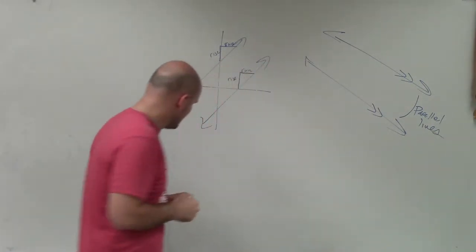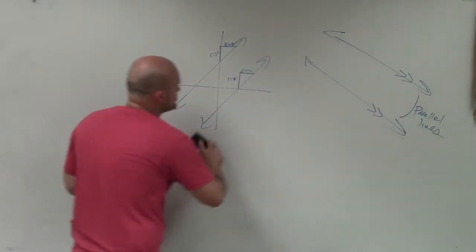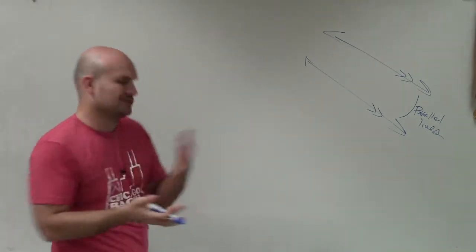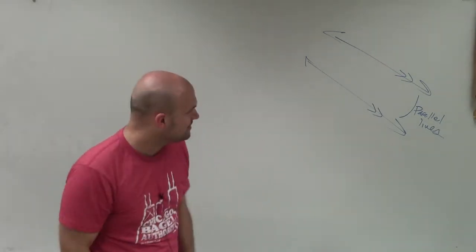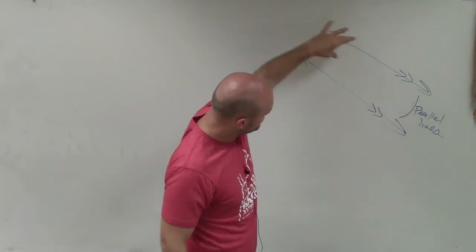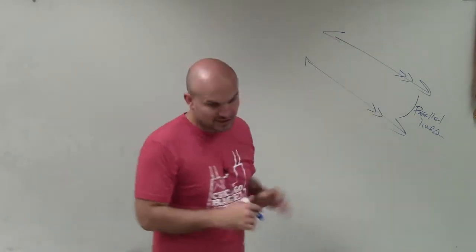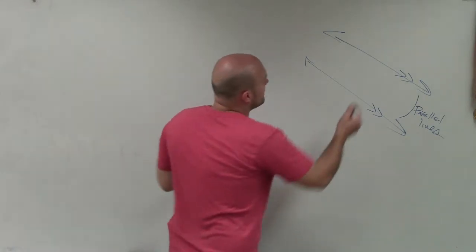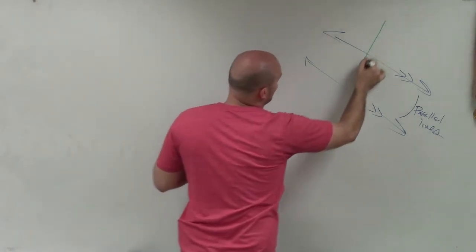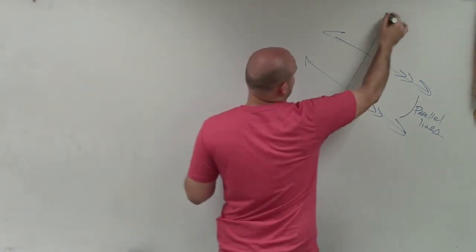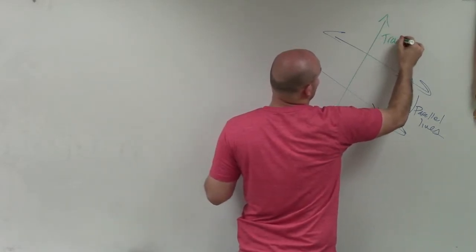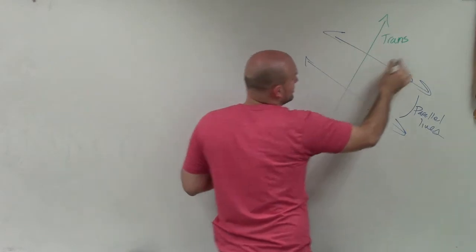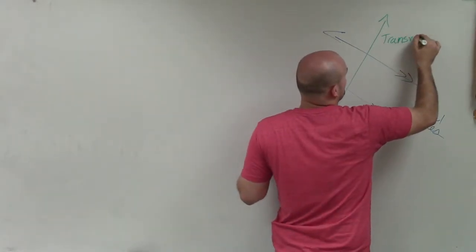Now, a new definition that we're going to be talking about is a transversal. So previously, you just learned how to graph parallel lines, talk about their slope, the y-intercept, and so on. Now we have parallel lines, two lines that extend indefinitely but never intersect. However, there's going to come a new line that is going to intersect both of those lines. And when you have a line that intersects two parallel lines, we call it a transversal.